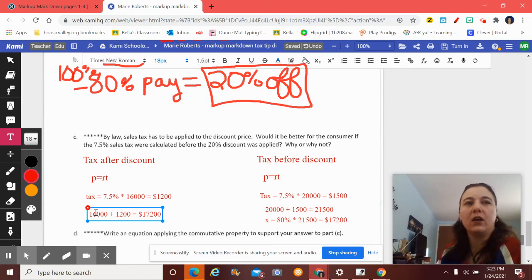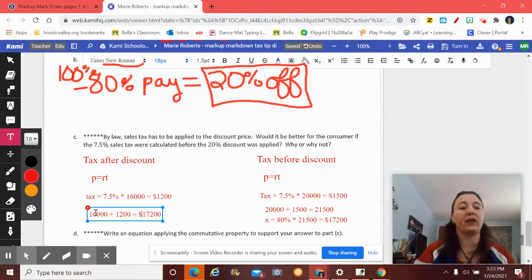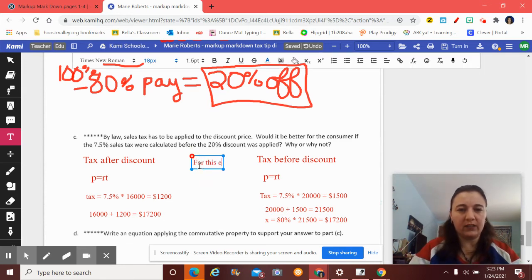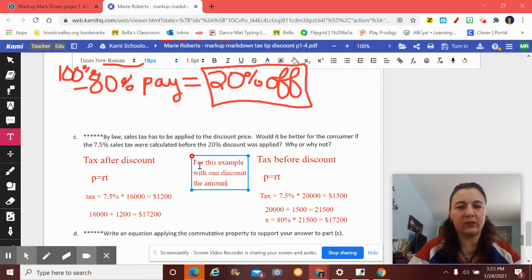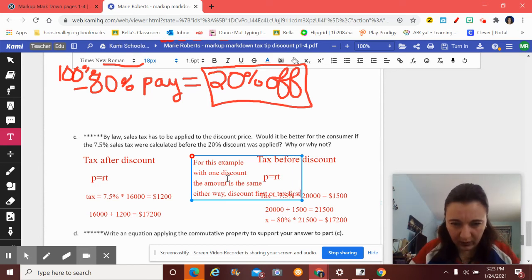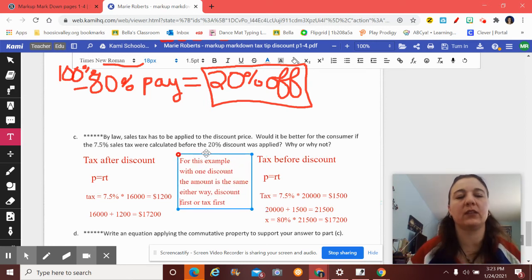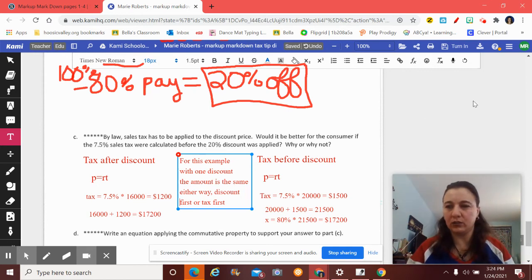It isn't going to happen all the time, but we only did one discount. So they do want things to do after the discount because sometimes you get extra discounts. And that changes everything. And I'm totally going to be asking you one of those questions during this packet. So it comes out the same for this example, with one discount, the amount is the same either way. Discount first or tax first. And it's always good, when you go to explain something, to use some numbers. Show me the numbers. Show me the money.